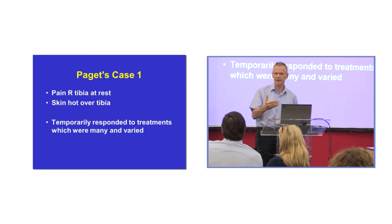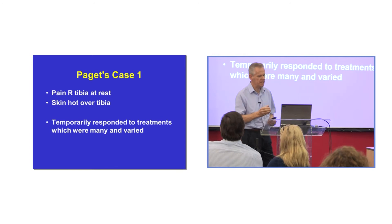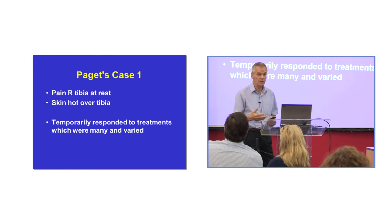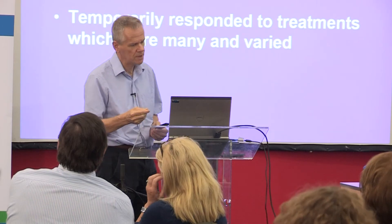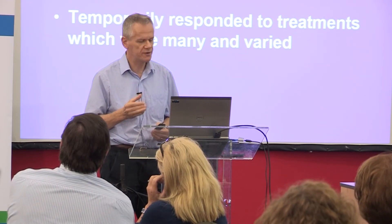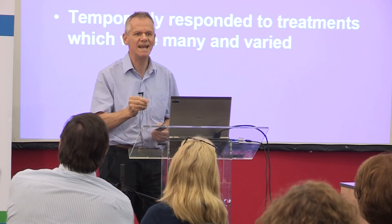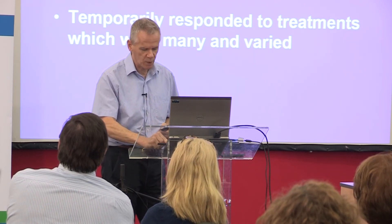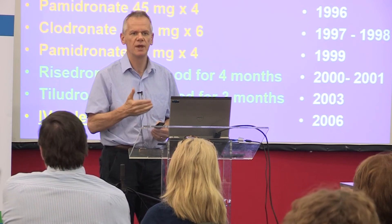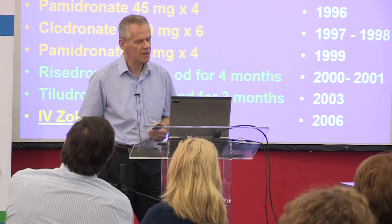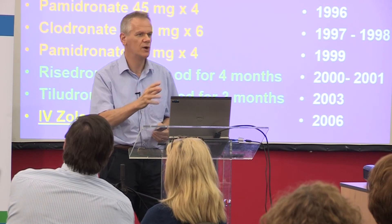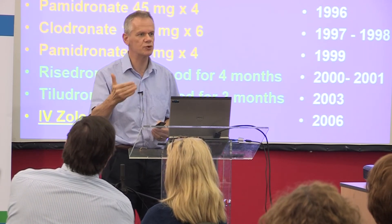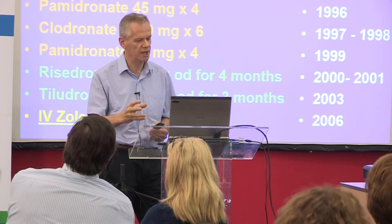We've heard about Paget's disease predisposing to osteoarthritis — wear and tear in the joint — and that's exactly what happened in this man. He had quite bad premature osteoarthritis in his right knee. He also had pain in his right tibia at rest, and the overlying skin was warm to the touch — a very typical clinical sign of Paget's disease. He had temporarily responded to various treatments, which were many and varied, and that's an important point when we reflect on the advance in treatments we now use.